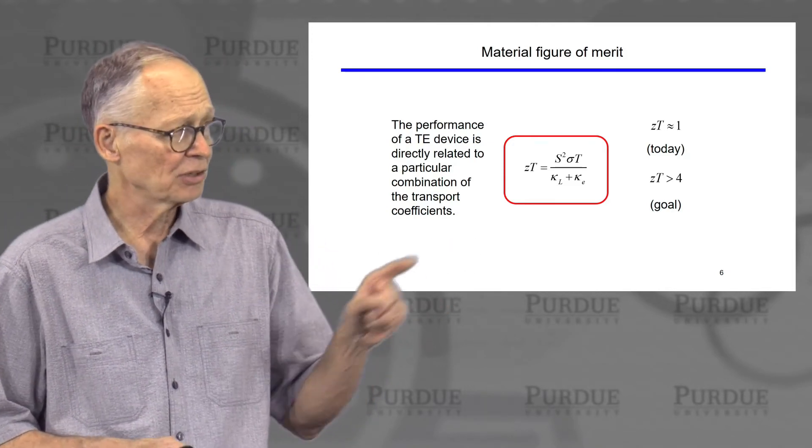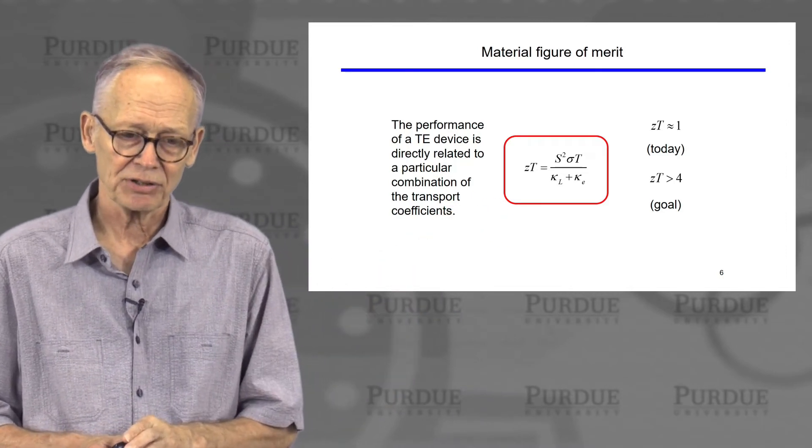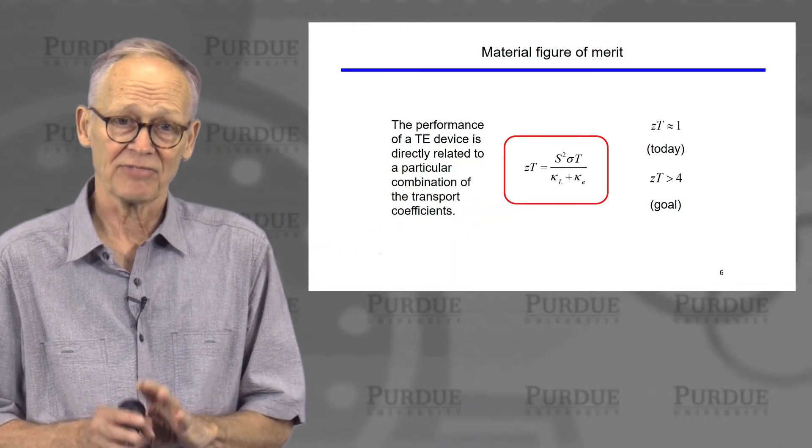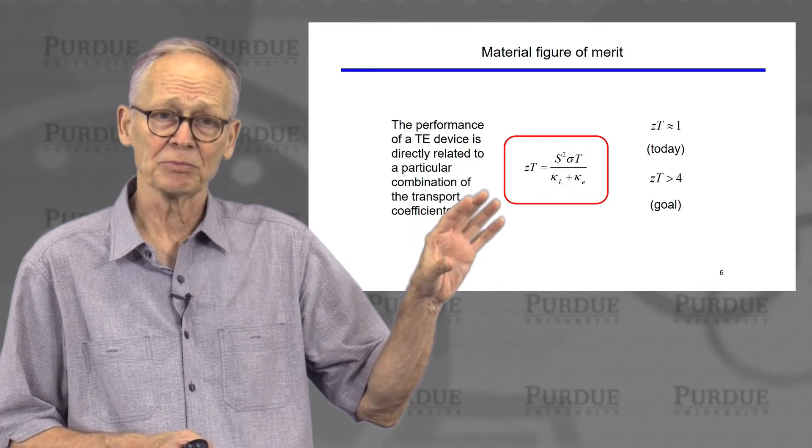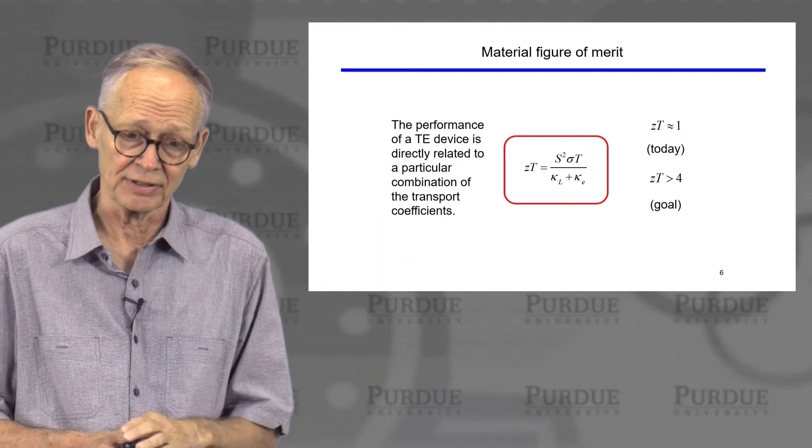This is a dimensionless figure of merit. We write it here as ZT. It is a material figure of merit. It depends on these five transport coefficients. And the higher this material figure of merit is, the higher the performance efficiency of the device.